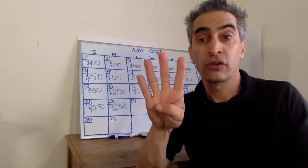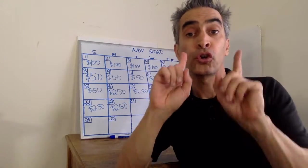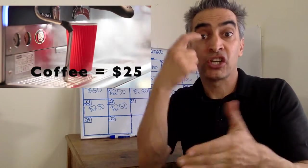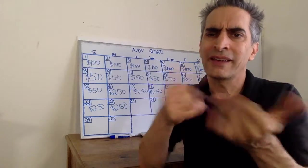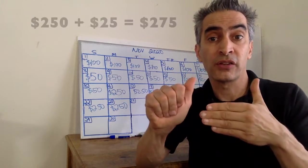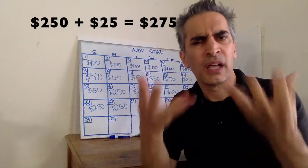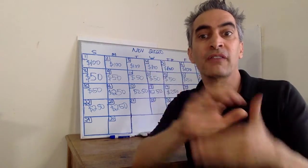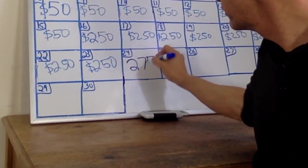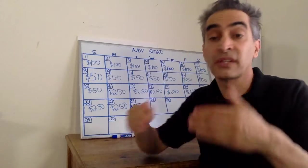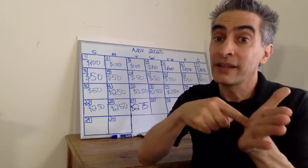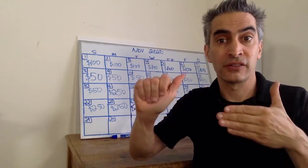On Tuesday, November 24th, you go to a deaf coffee chat and drink a lot of coffee, which costs $25. Your debt becomes $250 plus $25, which equals $275. For the rest of the month you don't buy anything, so your debt continues to be $275 for each of those days.